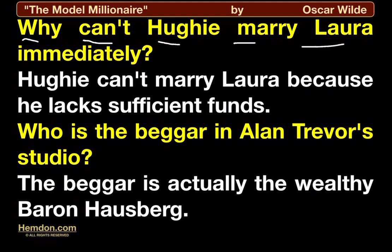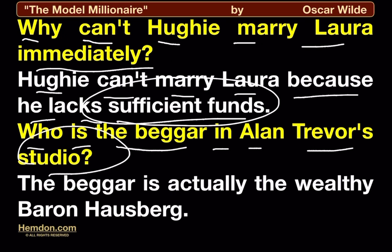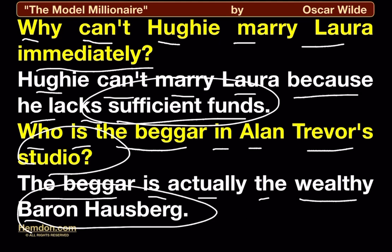Why can't Hugh marry Laura immediately? Hugh can't marry Laura because he lacks sufficient funds. Who is the beggar in Alan Trevor's studio? The beggar is actually the wealthy Baron Hausberg.